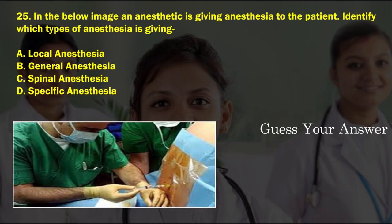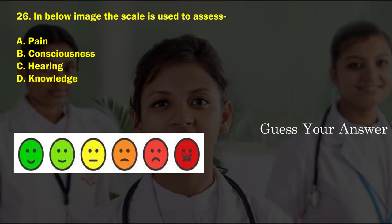In the below image, an anesthetist is giving anesthesia to the patient. Identify which type of anesthesia is being given. Option A: local anesthesia, option B: general anesthesia, option C: spinal anesthesia, option D: specific anesthesia. The correct answer is option C, spinal anesthesia.